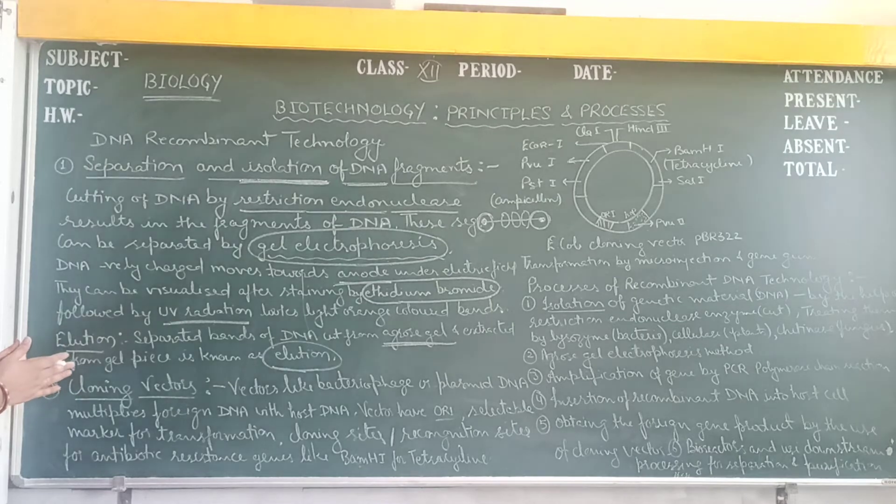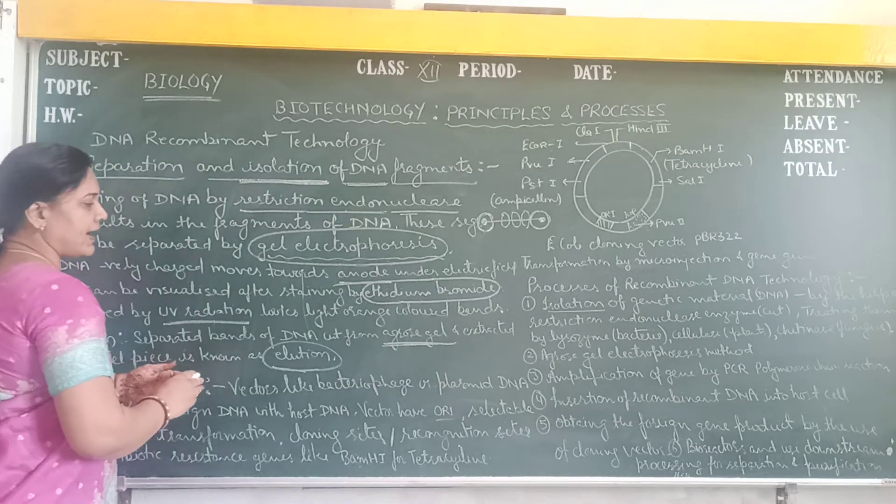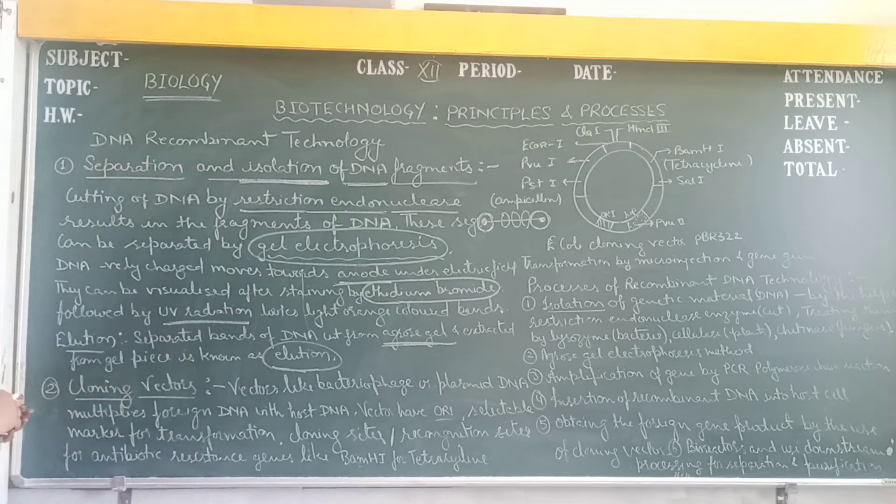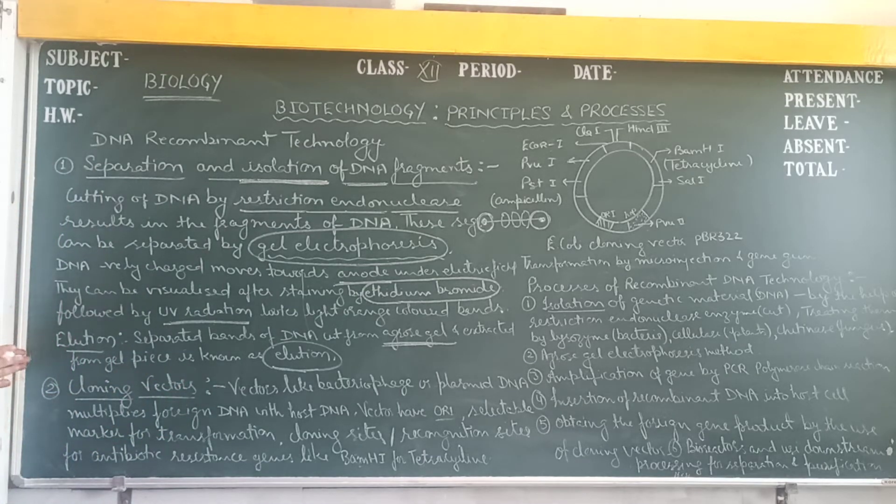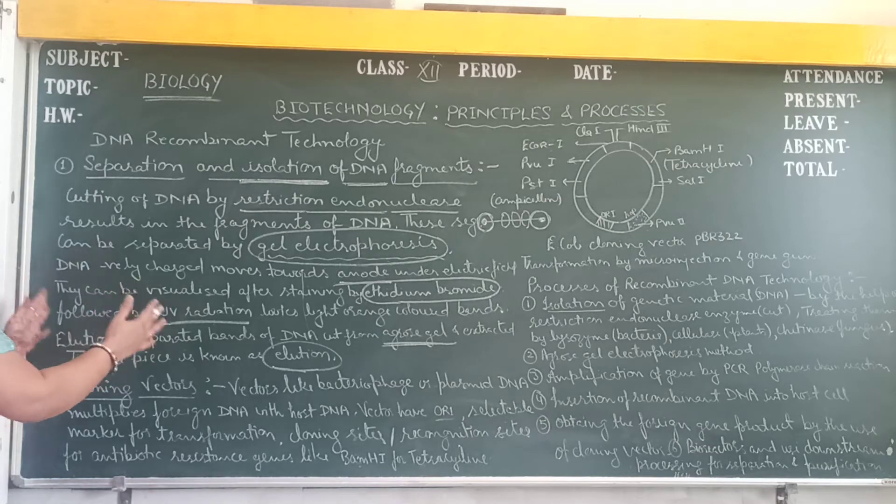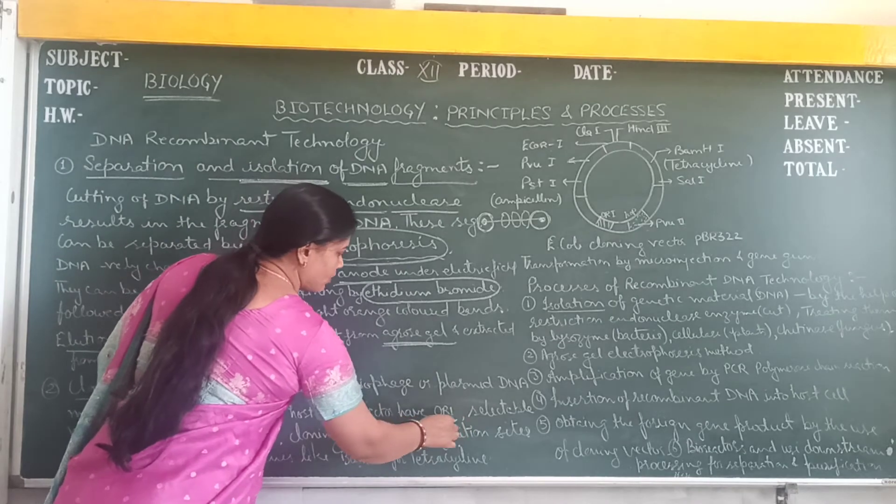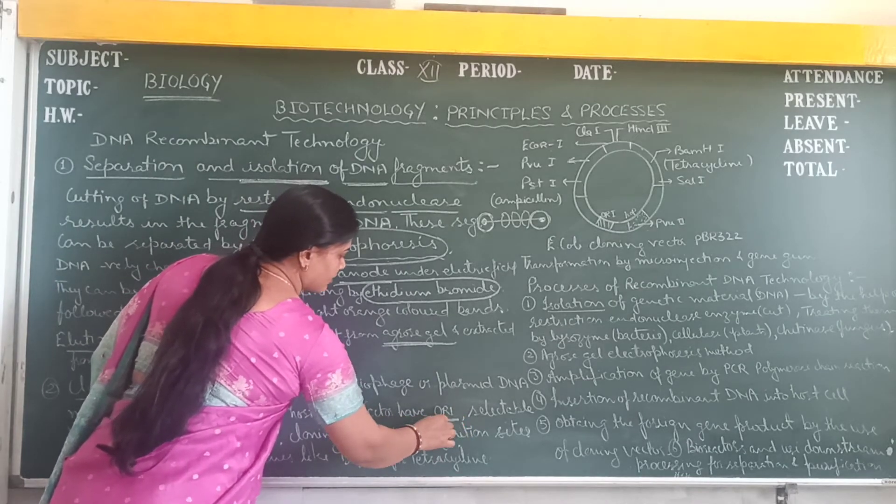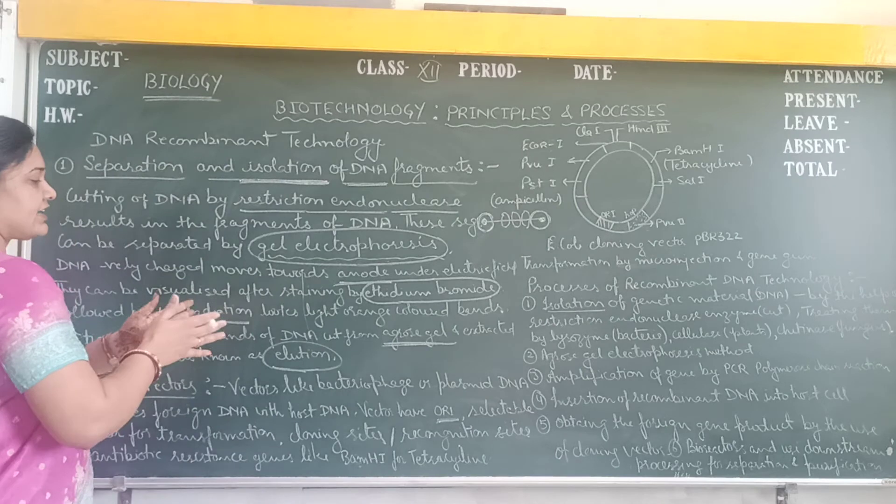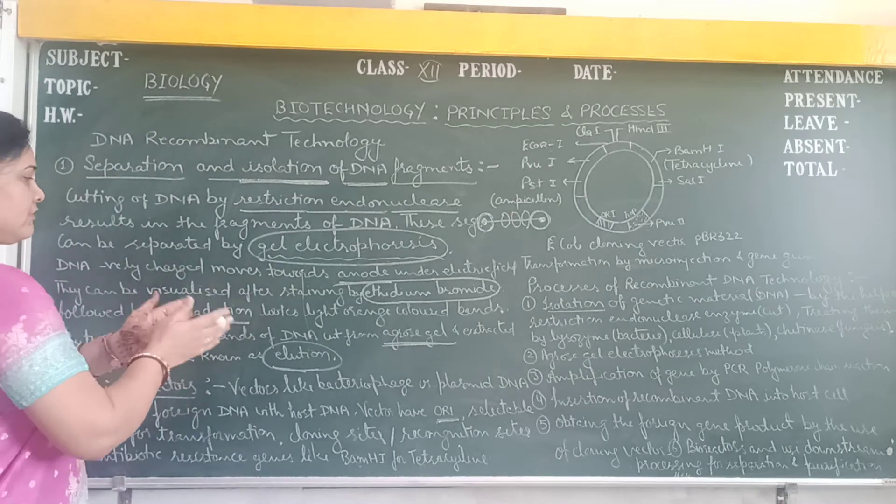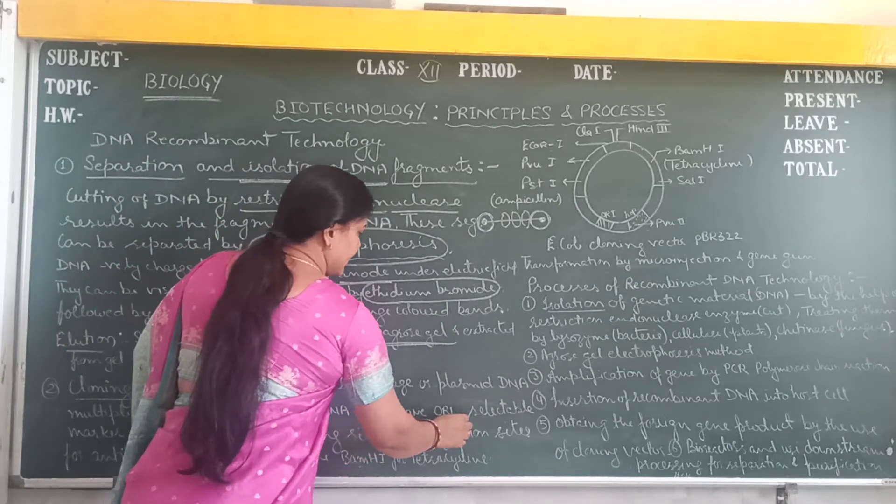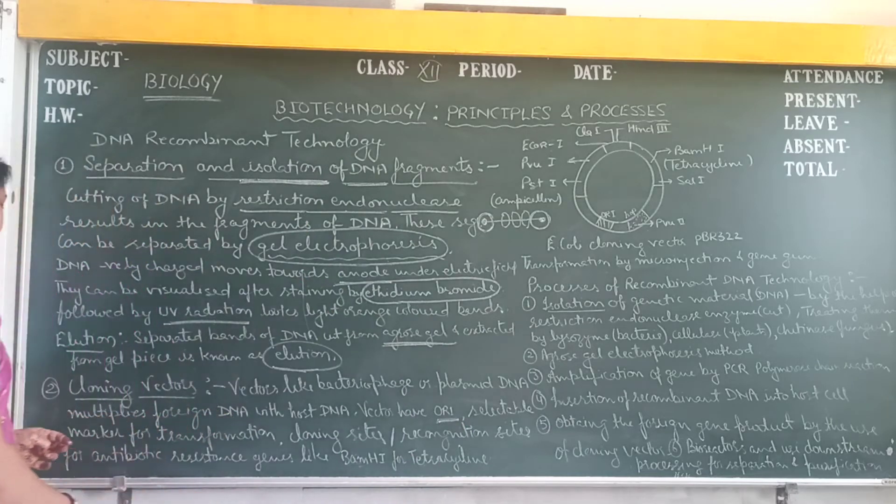Next is the cloning vector. The cloning vector, just like the bacterial plasmid DNA, it multiplies the foreign DNA with the host DNA. What are the features in the vector? They have the ori, origin of replication. Origin of replication is the starting point, the initiation point for the multiplication.